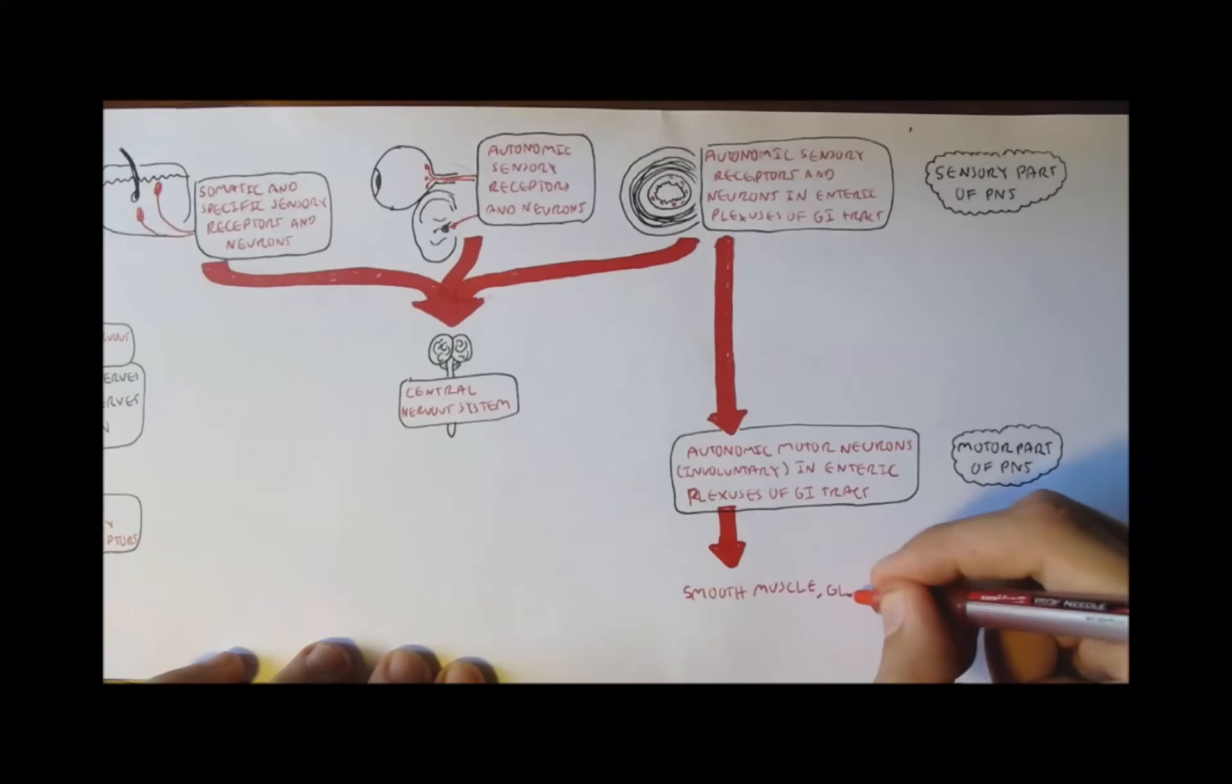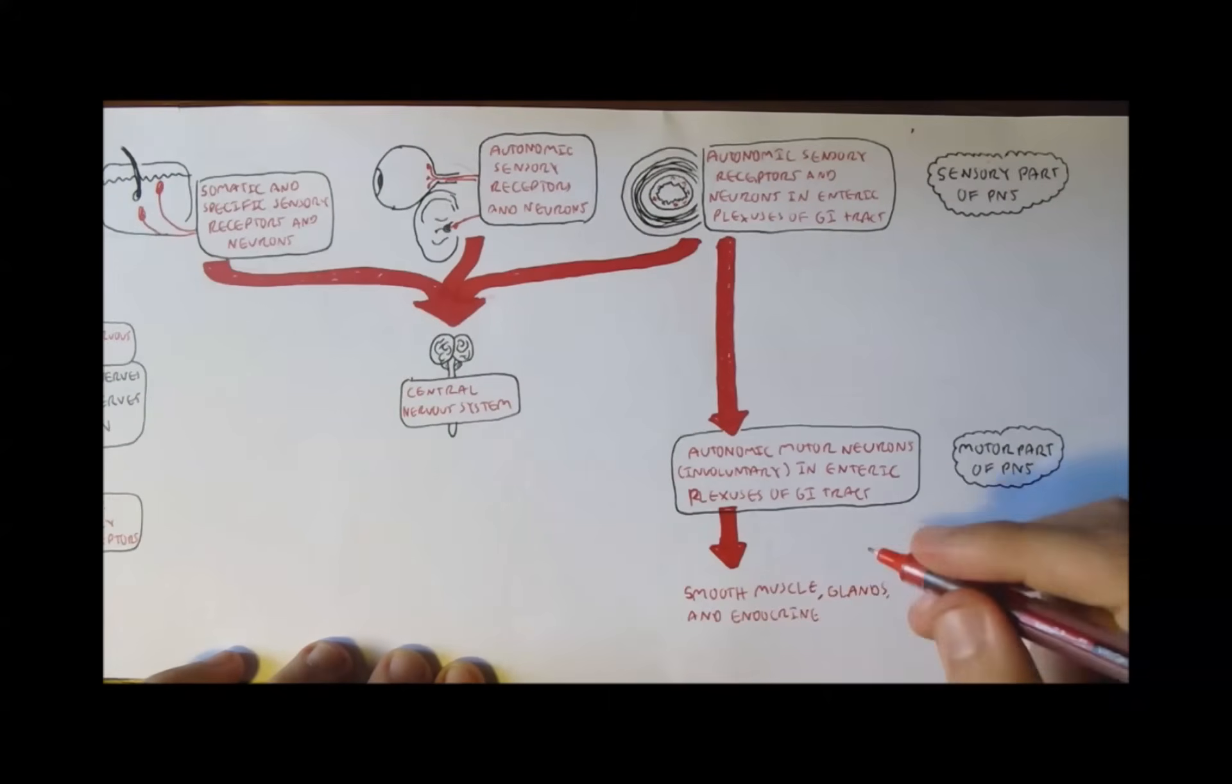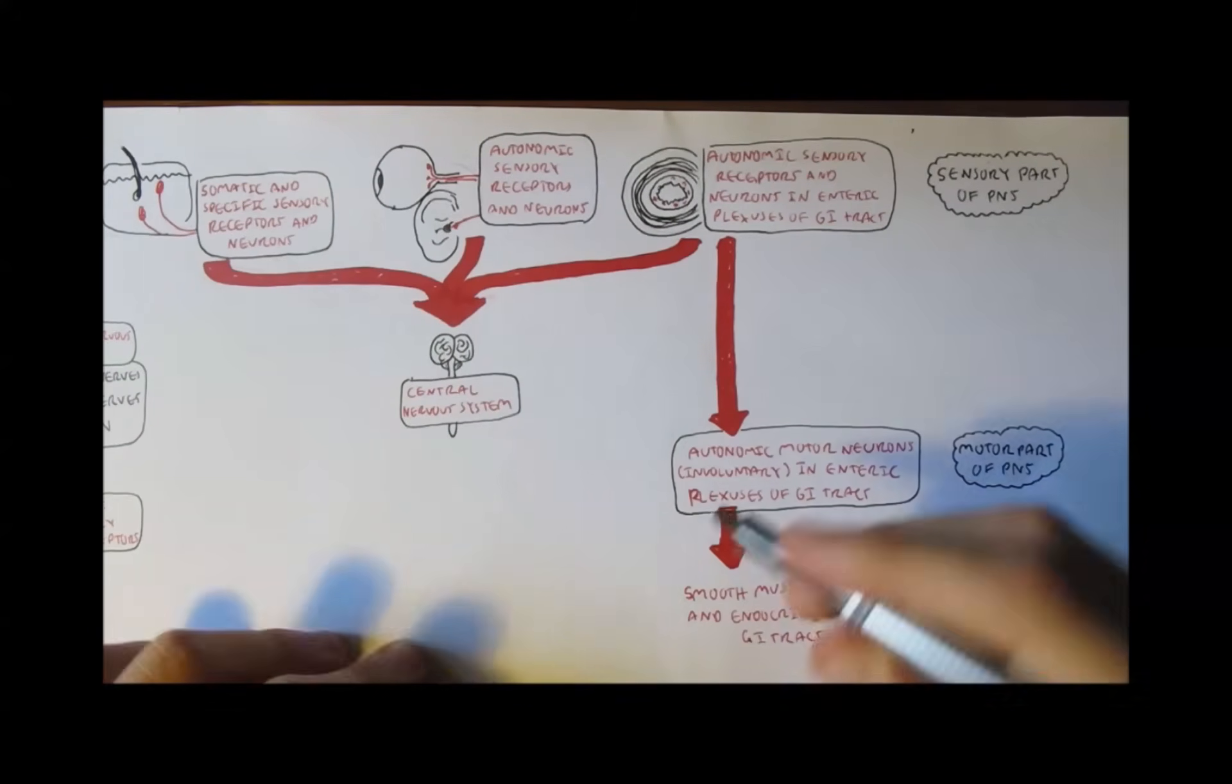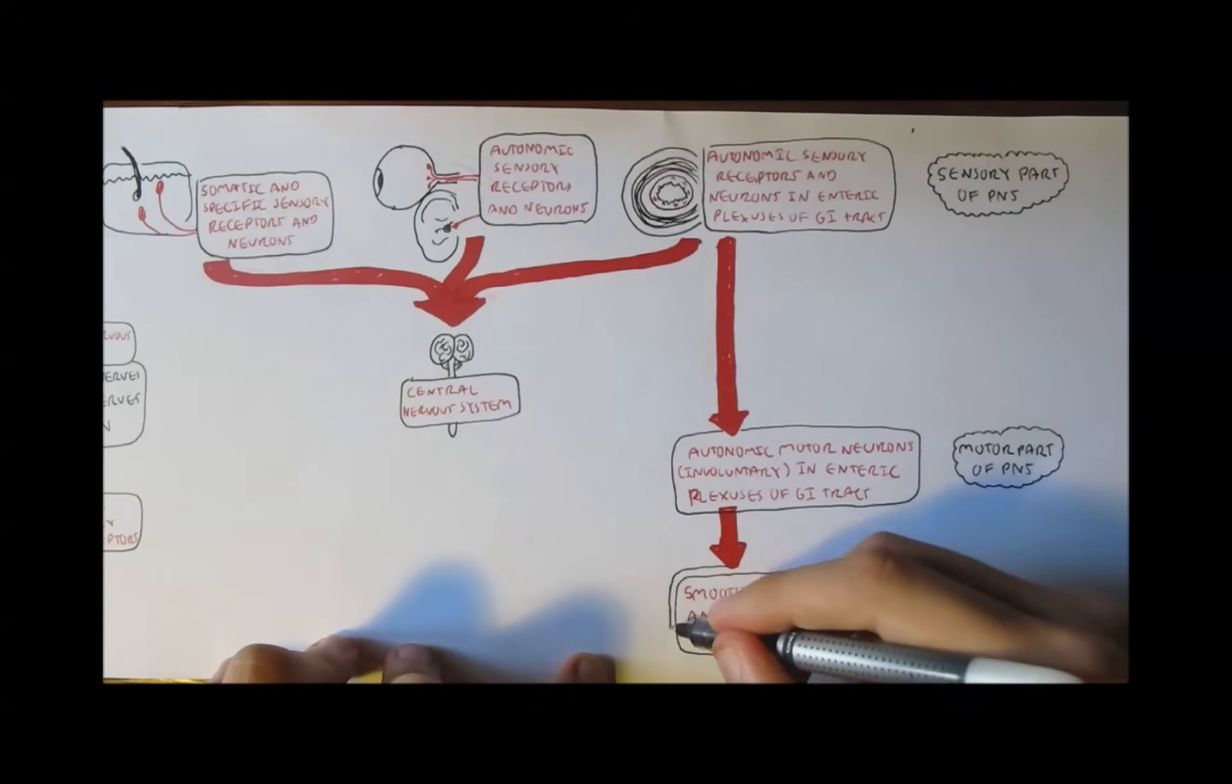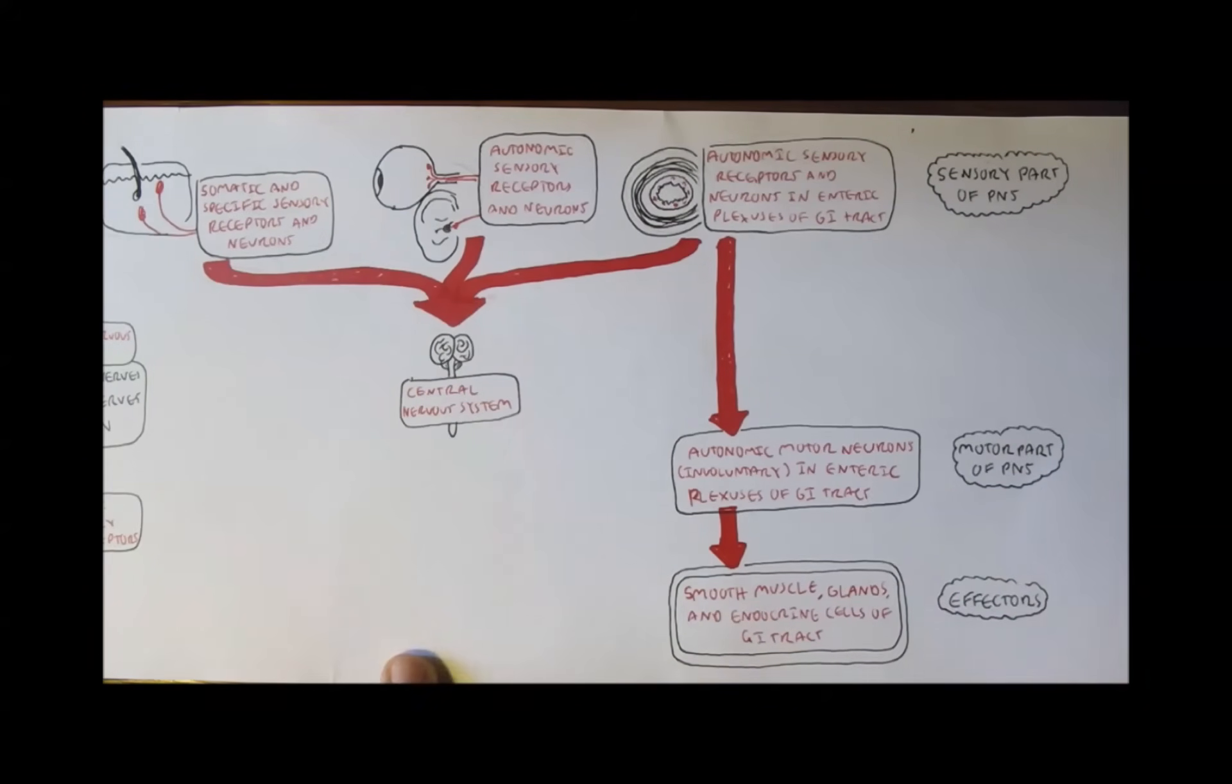The motor part of the PNS of the autonomic motor neuron can then target smooth muscles, glands, endocrine cells, etc., allowing contraction or secretion of certain chemicals. And this section, where the response is being carried out, is called the effectors.